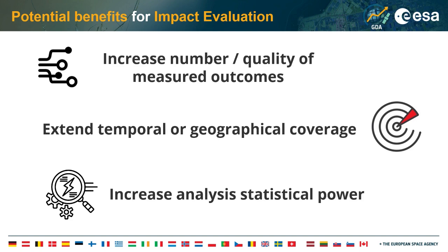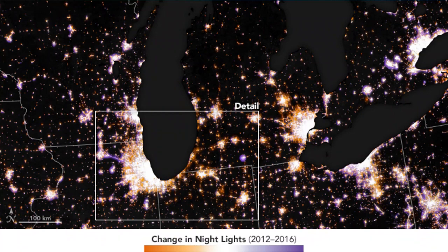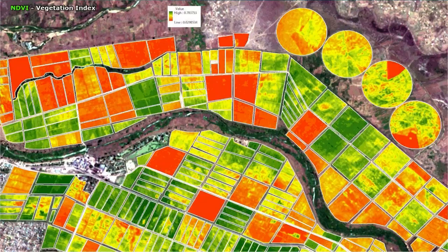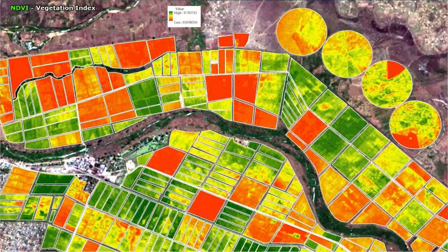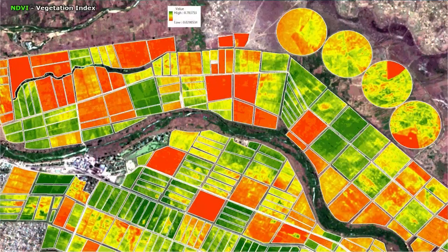Basic examples we often think about include nighttime lights — how this correlates with GDP, though there are a lot of caveats to take into account. Another example is the use of vegetation indices such as NDVI or NDWI, which can be used to monitor increases in agricultural productivity or the impacts of droughts. These can easily be used for impact evaluation exercises.